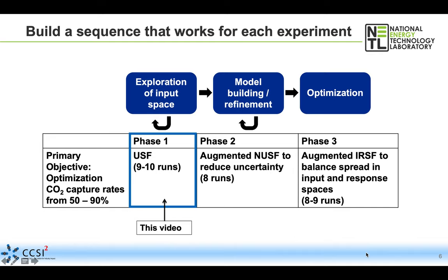The stages of the process look like this: we want to first explore our input space, then do some refined model building targeting particular areas of the input space to do model refinement and reduce uncertainty in our model. Finally, we want to move into optimization to find the optimum area—we're interested in CO2 capture rates of 50 to 90%. We'll use different design methodology to best meet the objectives of each of these phases.